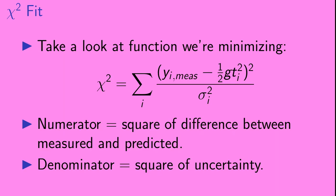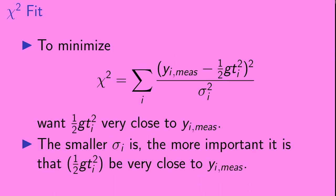Okay, so let's take a look at that function that we're minimizing. Our chi-squared is a sum of a set of fractions. And in each one of those fractions, we have a numerator and a denominator. In the numerator, we have the square of the difference between the measured value and the value predicted for that particular value of g. In the denominator, we have the square of the uncertainty for a given data point. So in order to minimize chi-squared, we want to get, for each data point, one-half gt-squared very close to the measured value of y. Furthermore, for each data point, the smaller that sigma is, the more important it is that one-half gt-squared be very close to y measured.